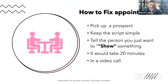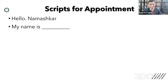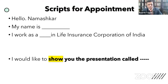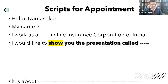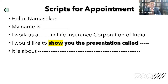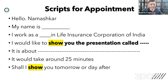A sample script for appointment: 'Sanjay Mahal sir, hello, namaskar. My name is Rajesh Tagore. I work as an agent in the Life Insurance Corporation of India. I would like to show you the presentation called Second Innings. Second Innings is about when are you going to retire, how many years are you going to live after retirement, and how are you going to live those years. It's a beautiful presentation, part of our kit called the Wealth Kit. It's going to take around 25 minutes. Shall I come to show you tomorrow or day after?' That's the script.